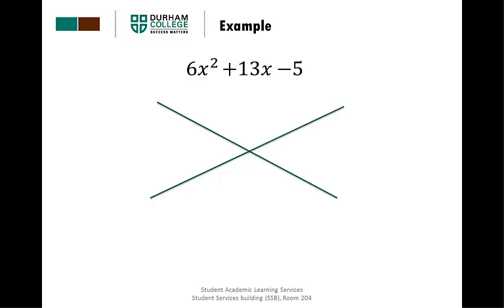Our example is 6x squared plus 13x minus 5. The very first thing we're going to do is see if we can common factor anything out of this particular trinomial. As there is nothing that goes into 6, 13, or negative 5 and they don't share a common variable, we don't have a common factor so we're going to start factoring this as is.